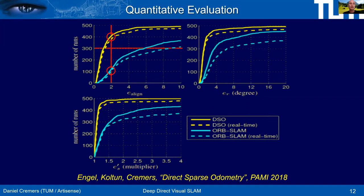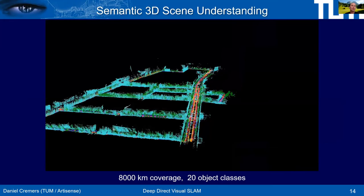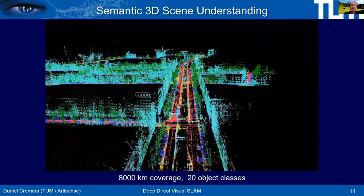Deep neural networks have swept computer vision in the last decade, essentially replacing classical methods in object recognition, categorization, optical flow, and segmentation. One remaining challenge is reconstruction of the world from moving cameras. Deep networks to date have not shown spectacular performance here and often don't outperform the state of the art. One issue is that end-to-end approaches — where images go in and the world and camera trajectory come out — may be overly ambitious.